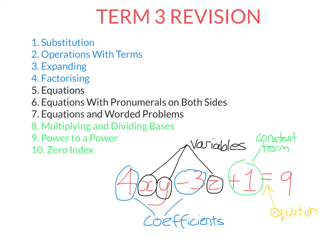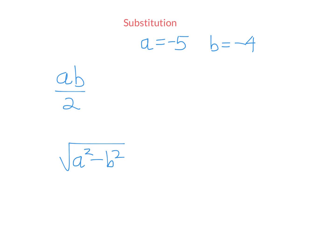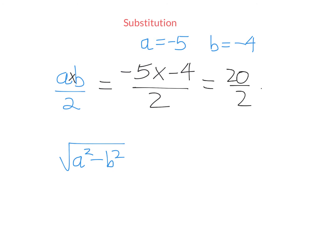Let's get into substitution. Substitution is where you assign to each variable a value, and you substitute — exchange the variable for that value — in an expression. So for this expression here, this means a times b over 2. If you don't see any operation between pronumerals, it always means times. So the value of this expression will be a times b divided by 2. I'm just exchanging a for minus 5, b for negative 4. Negative times a negative is always a positive. This becomes positive 20 over 2, which is equal to 10.